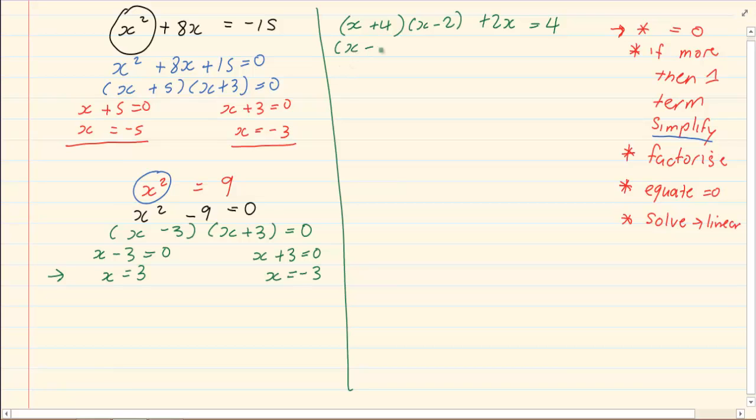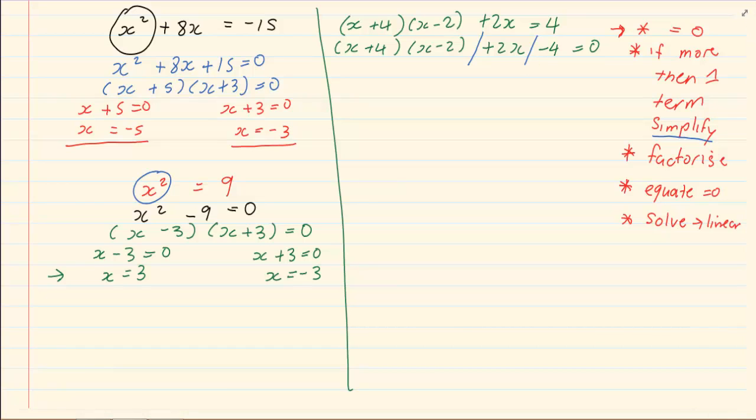So we have x plus 4 into x minus 2 plus 2x minus 4 is equal to 0. But look at this equation. There is more than one term in this equation. We have three terms which means we have to simplify before we can continue.